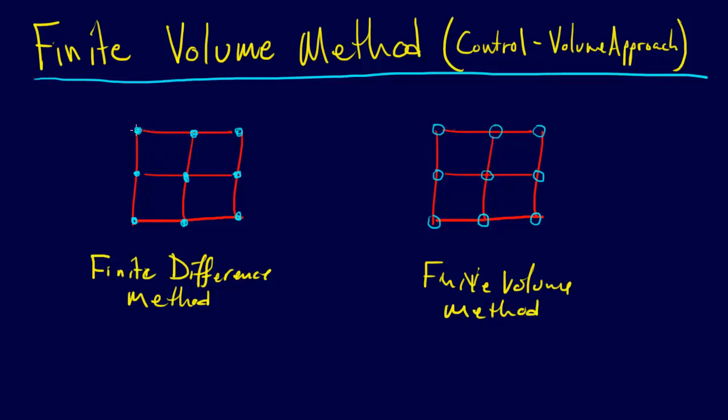So in the finite difference method, we actually use the values at every one of the nodes. So if we're going to compute the value at this node, we use the value at this node, the value at this node. We use the value at this node, this node, this node, and this node actually. So that's what we do in the finite difference approach. And we're calculating the temperature at each point.